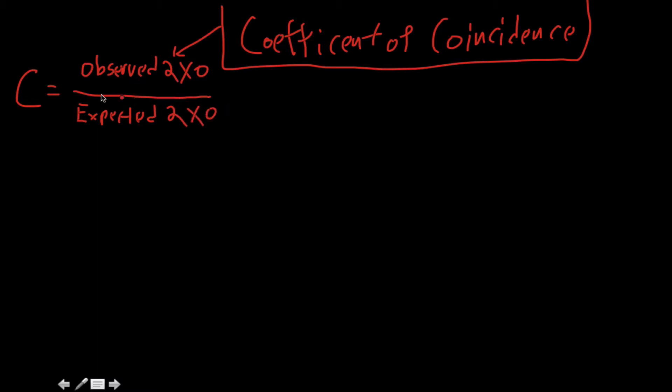I hope you're not seeing a trend here of everything being divided by the expected, but this is what we use. So remember that in our equation, and I'll just write this up at the top, of interference, before we can figure out what interference is, we need to figure out what the coefficient of coincidence is. So interference is equal to 1 minus C. How do we get C? Well, this is how we get C. So observe, you can get that from your experimental data.